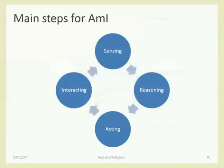To simplify, we define an ambient intelligence system as a system that always implements and cycles through four major steps. Each one of our projects will have these four steps. If one of them is missing, there is not an ambient intelligence system and it will not be valid. The four steps are: sensing, reasoning, acting, and interacting.